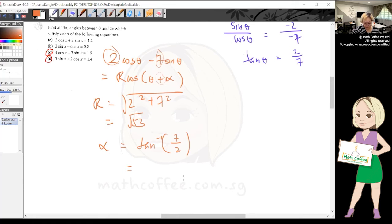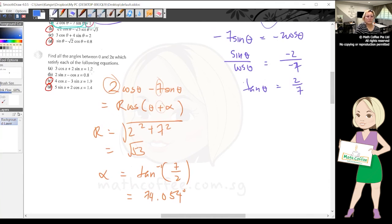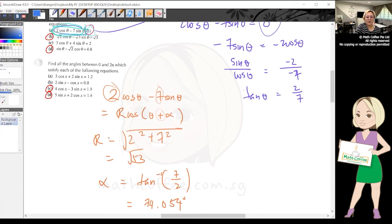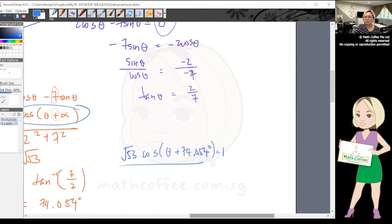So tan⁻¹(3.5)... this one is in degrees, so tan⁻¹(3.5), in the end I get 74.054°. Then now you can say this one will be √53 cos(θ + 74.054°) = 1. Because I have changed it to this format, then it equals to 1, continue to solve.